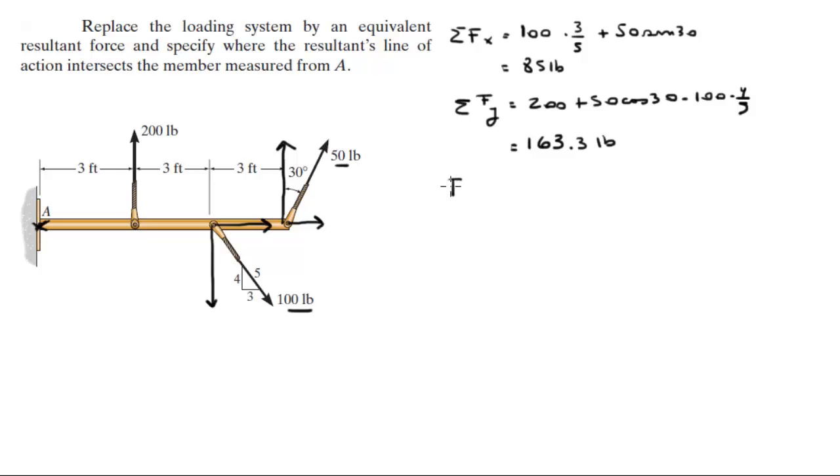So the resultant force is equal to 85 pounds in the I plus 163.3 pounds in the J. Its magnitude is given by the square root of the X component squared plus the Y component squared.